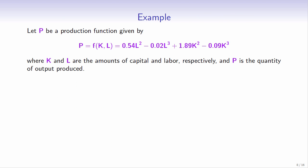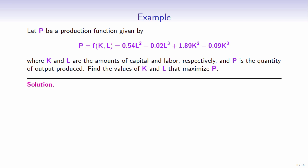Let's look at an example. Let p be a production function given by 0.54l squared minus 0.02l cubed plus 1.89k squared minus 0.09k cubed, where k and l are the amounts of capital and labor respectively, and p is the quantity of output produced. Find the values of k and l that maximize p. Notice that p is a function of two variables k and l, so we need to follow the four steps.